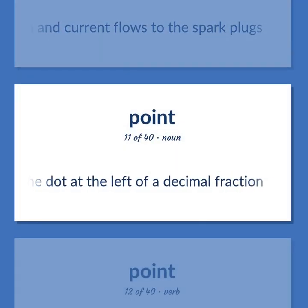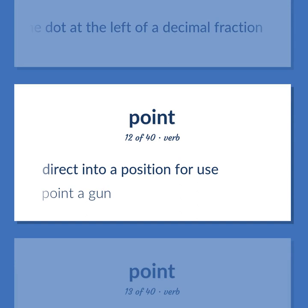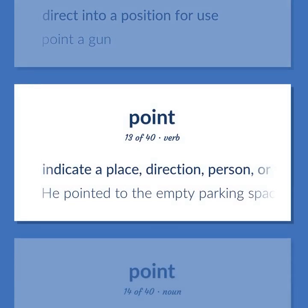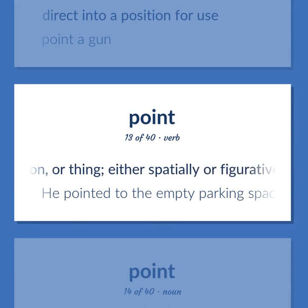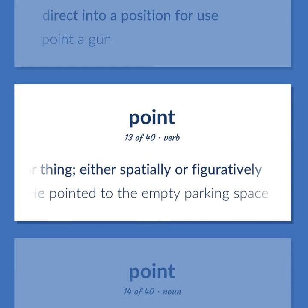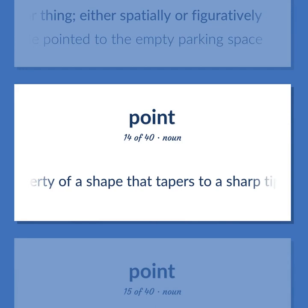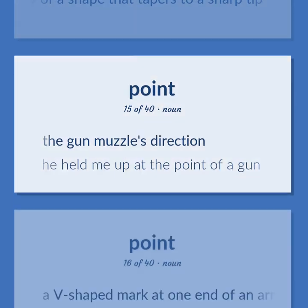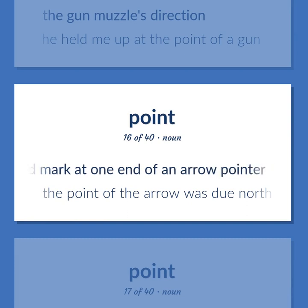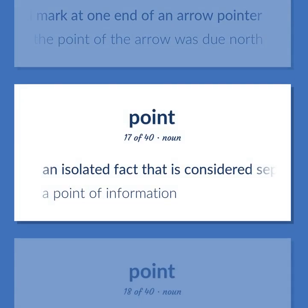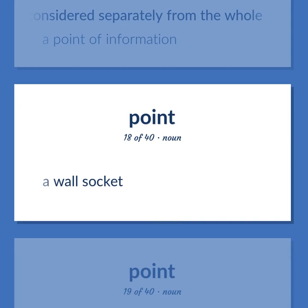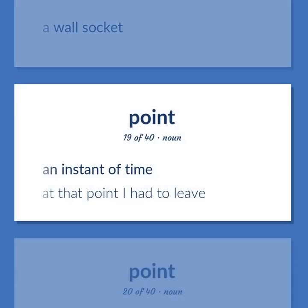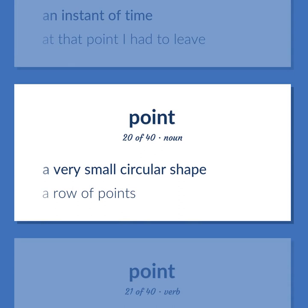The dot at the left of a decimal fraction. Direct into a position for use. Point a gun. Indicate a place, direction, person, or thing, either spatially or figuratively. He pointed to the empty parking space. The property of a shape that tapers to a sharp tip. The gun muzzle's direction. He held me up at the point of a gun. A V-shaped mark at one end of an arrow pointer. The point of the arrow was due north. An isolated fact that is considered separately from the whole. A point of information. A wall socket. An instant of time. At that point I had to leave. A very small circular shape. A row of points.